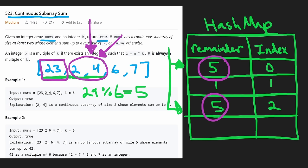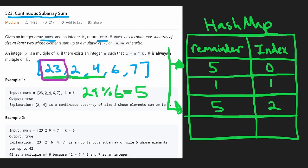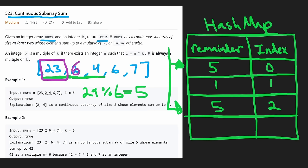The reason we store the index in the hash map is to verify that the subarray is at least two values long. The first prefix ended at index 0; the second ends at index 2. The difference is 2, so the subarray is two values long — valid. If the difference were only 1, that would mean only one value in the subarray, which doesn't satisfy the at-least-two-elements requirement.